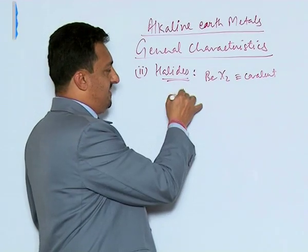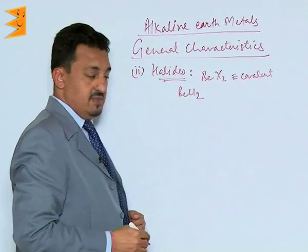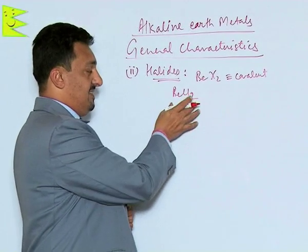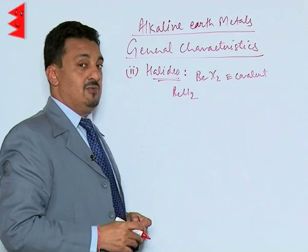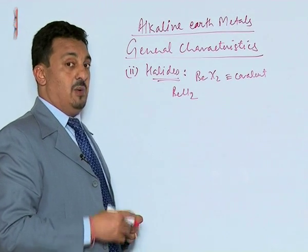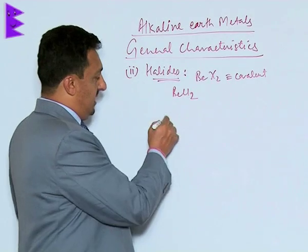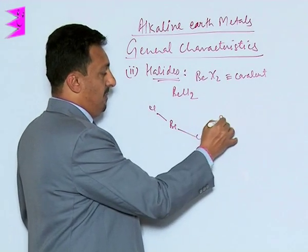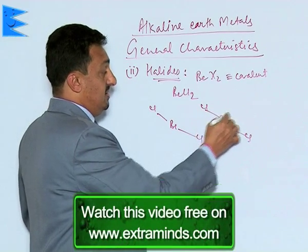Let us discuss beryllium chloride. Beryllium chloride exists as one unit at a very high temperature, around 1200 Kelvin. When heated above 1000 Kelvin, it exists as a monomer; otherwise, in the solid state, it always exists in a polymeric structure.